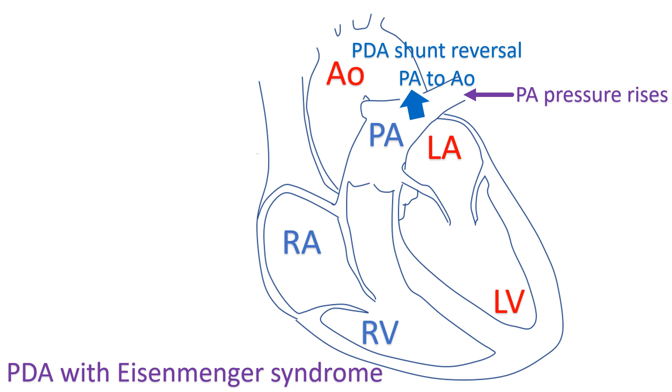After some time, this mechanism fails and there is disproportionate pulmonary hypertension, which is known as reactive pulmonary hypertension.